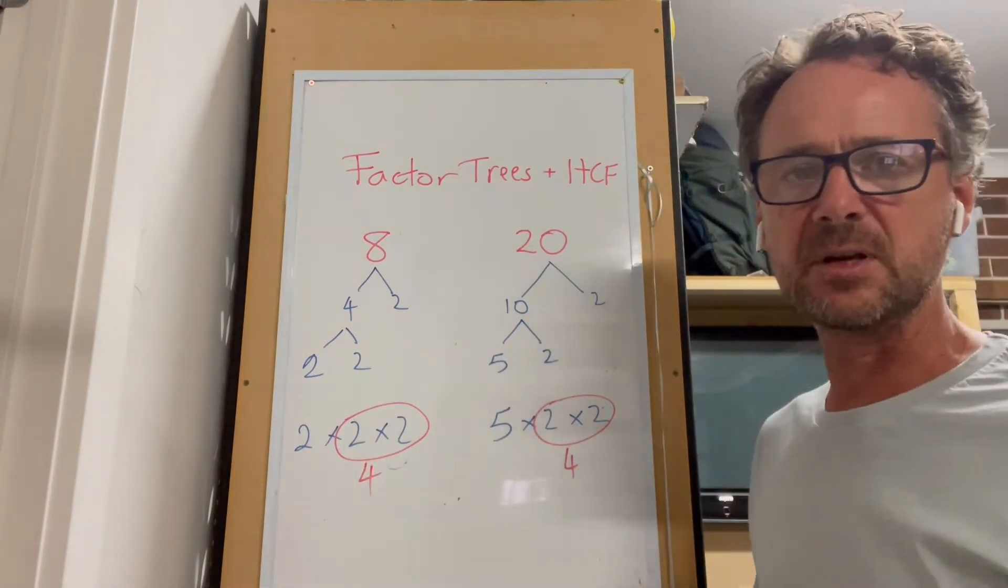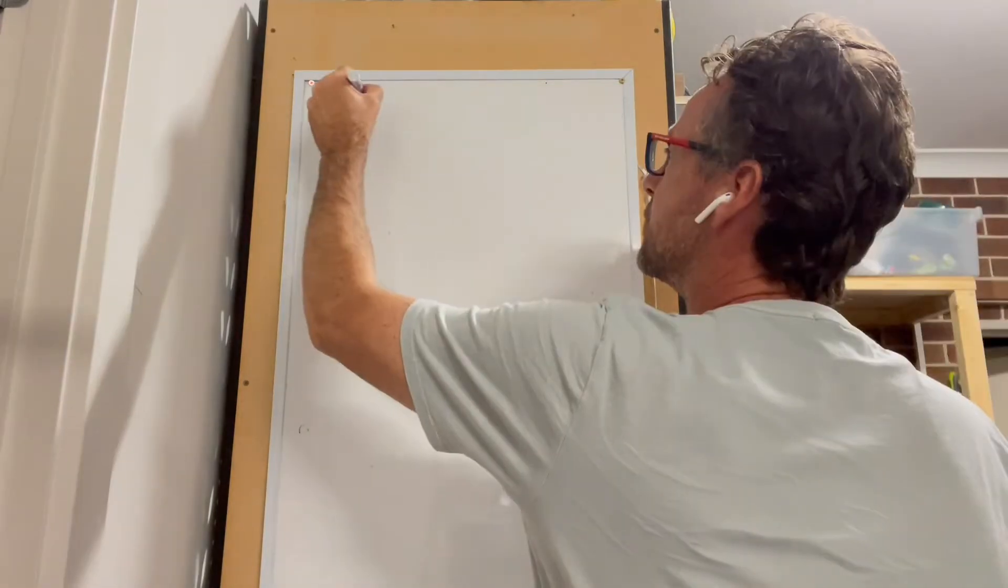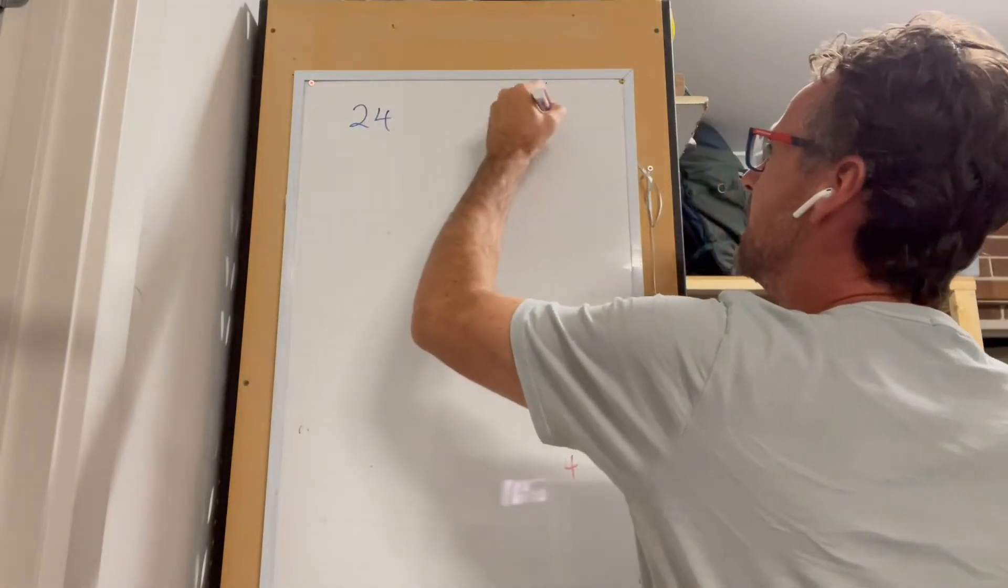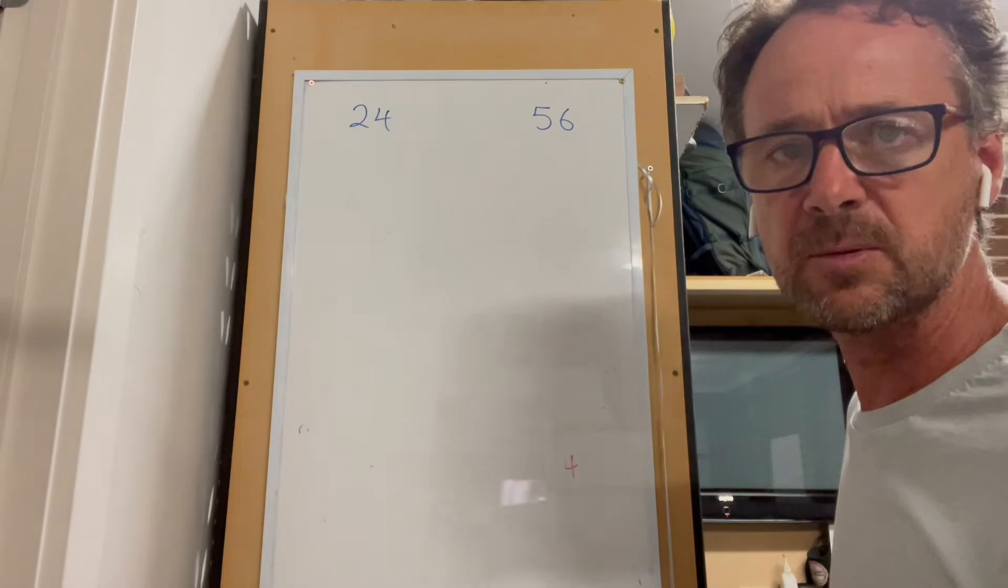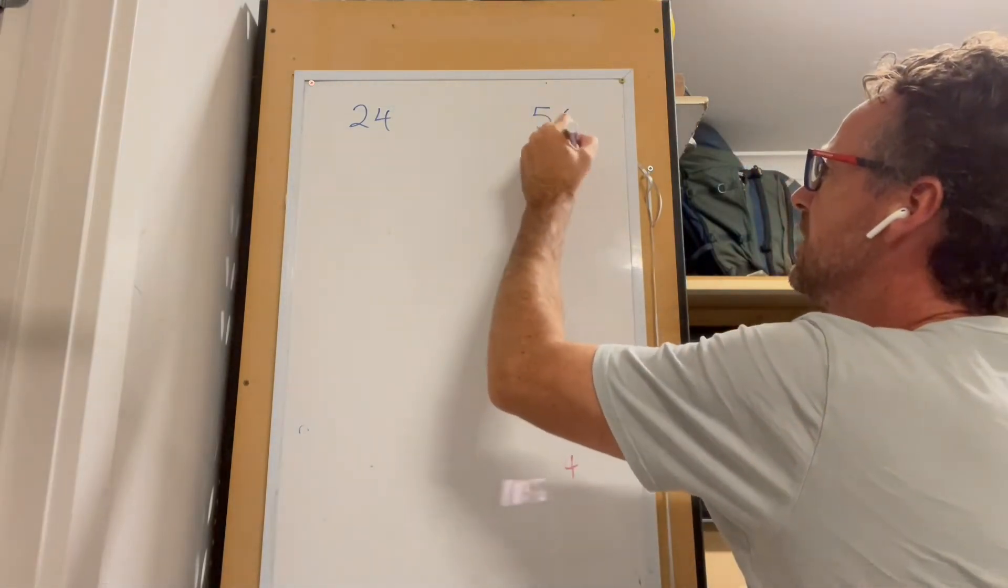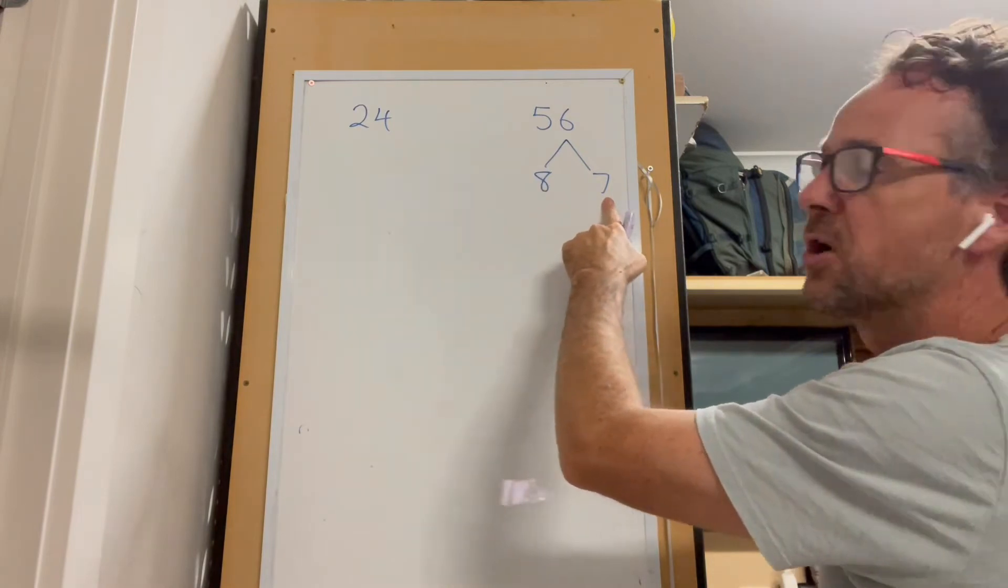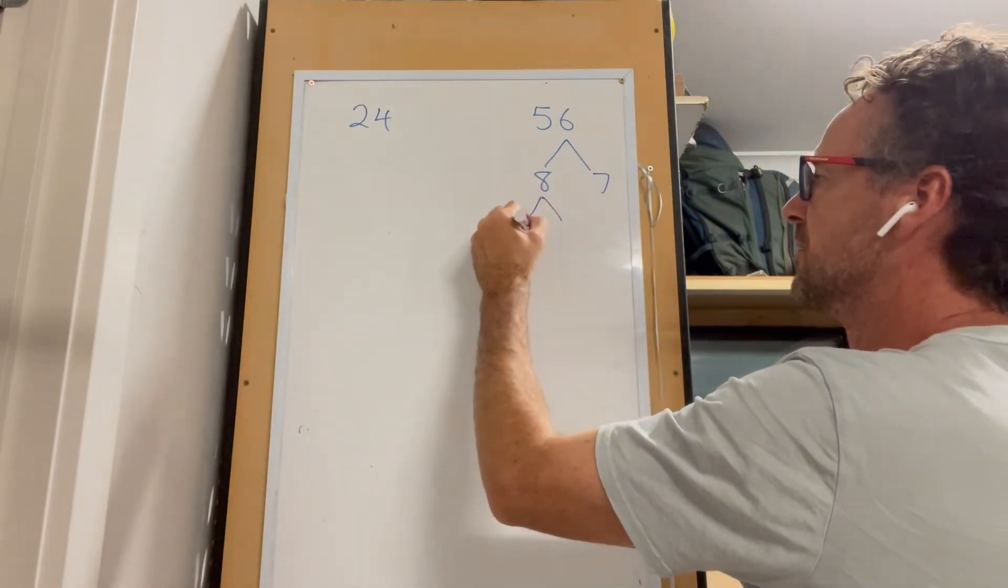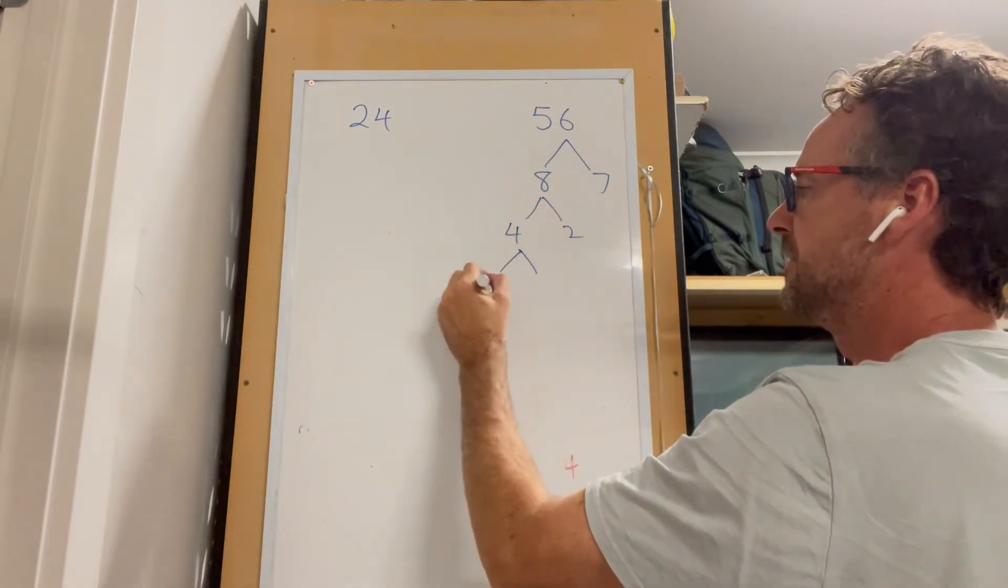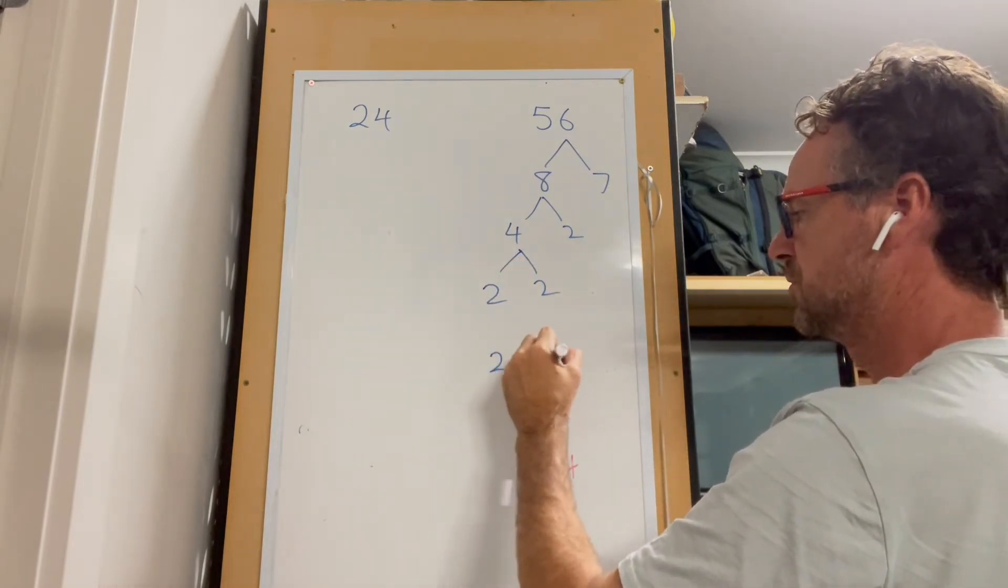So 24 and 56 - what's the highest common factor for these two? Firstly, 56 is 7 and 8. I've chosen 7 because it's already prime, and then 8 gives us 4 and 2, and this gives us 2 and 2. So we've got 2 times 2 times 2 times 7.